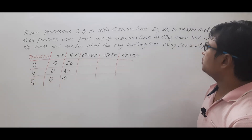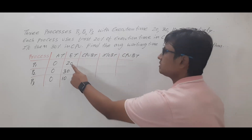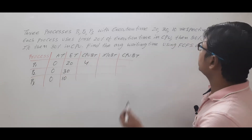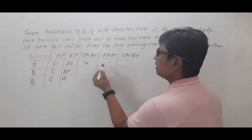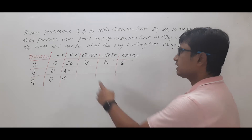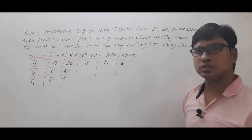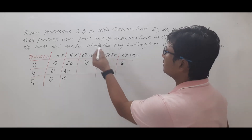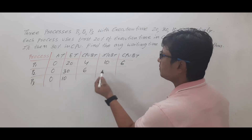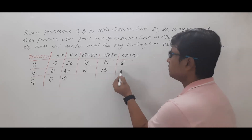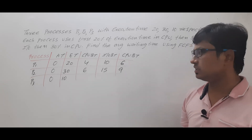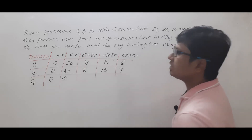Now, 20% of 20 is 4 units CPU. Then 50% of 20 is 10 units IO. Then 30% of 20 is 6 units CPU. You can verify: 4 plus 10 is 14, plus 6 is 20. For P2: 20% of 30 is 6, 50% of 30 is 15, 30% of 30 is 9. Verify: 6 plus 15 is 21, plus 9 is 30.